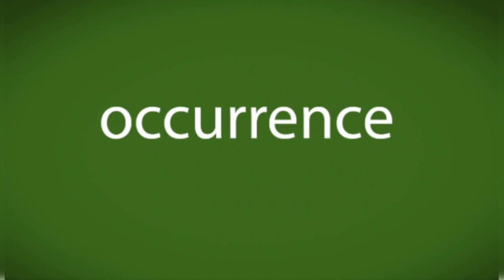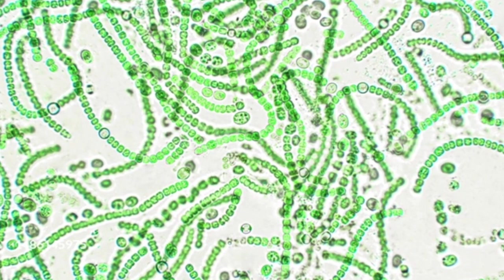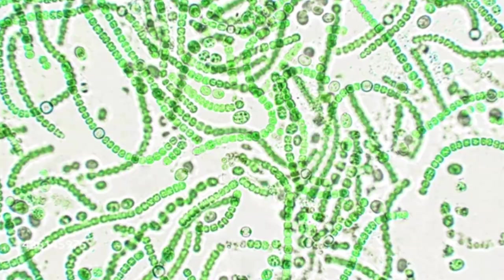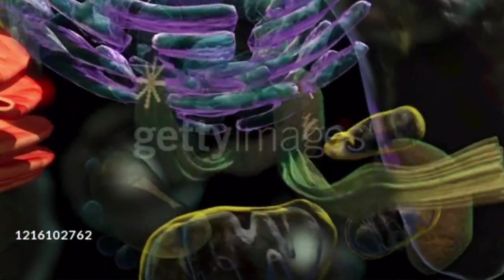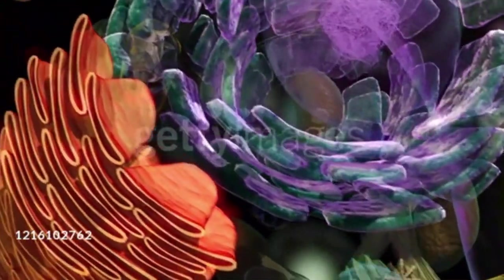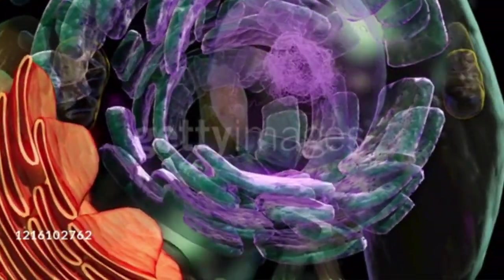Occurrence of Amitosis. In prokaryotes: certain bacteria, cyanobacteria. In eukaryotes: yeast, amoeba, cartilage cells, macronucleus of paramecium, fetal membrane cells, endosperm cells of seeds.